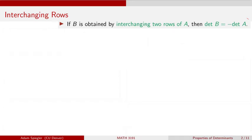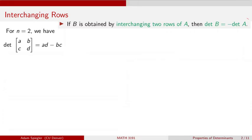In this video, let's take a look at one of these properties of determinants and elementary row operations, namely that if we apply the interchanging of two rows to matrix A to obtain matrix B, then the determinant of that resulting matrix B, which has had a couple of rows interchanged, is going to be minus one times the determinant of the original matrix A. Let's take a look at this, first with the two-by-two case.